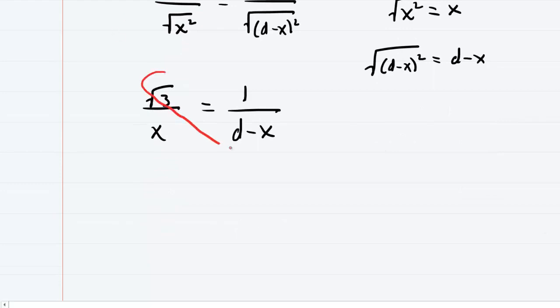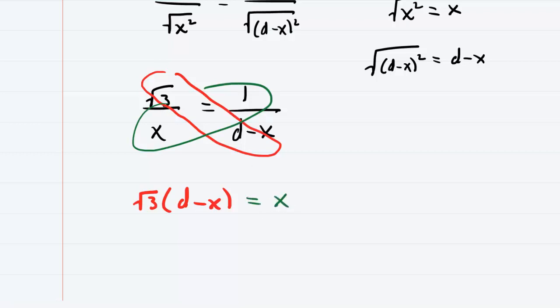We are getting there. I would probably cross multiply next. So we'll multiply those two quantities, radical 3 times d minus x, and then I'll cross multiply the other way, x times 1, which of course is just x. Let's distribute the radical 3. So now we have radical 3d minus radical 3x equals x.